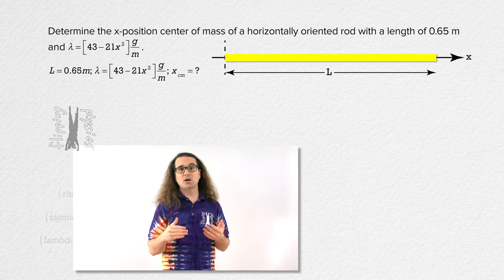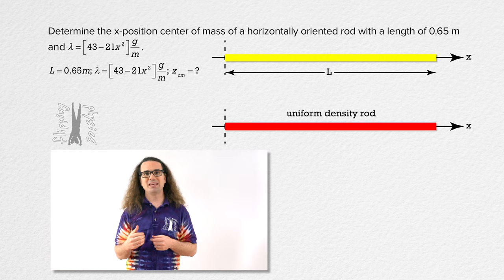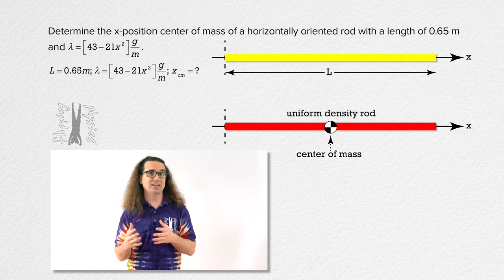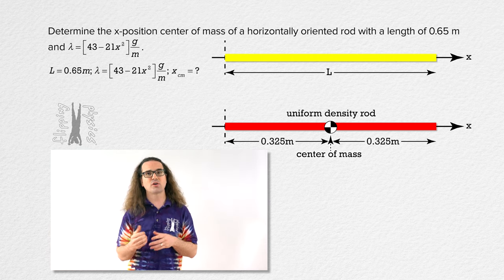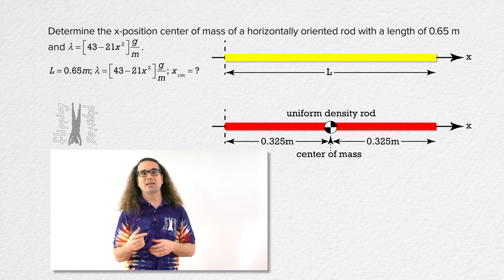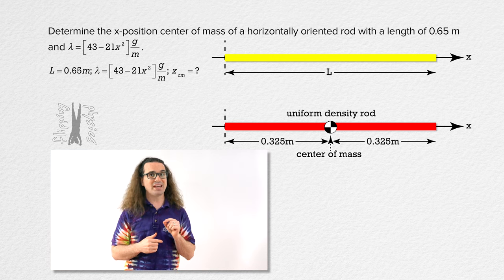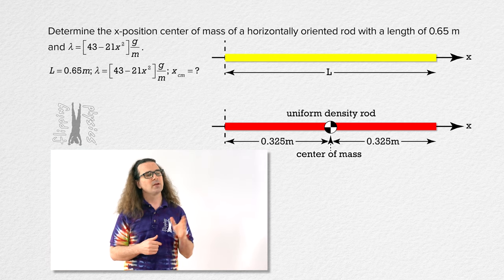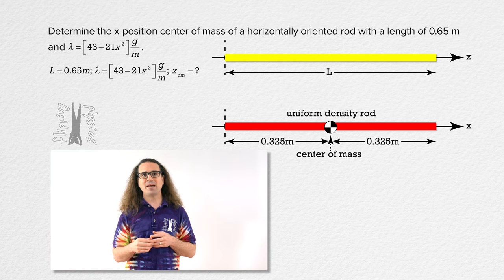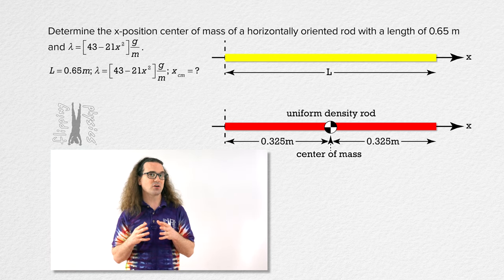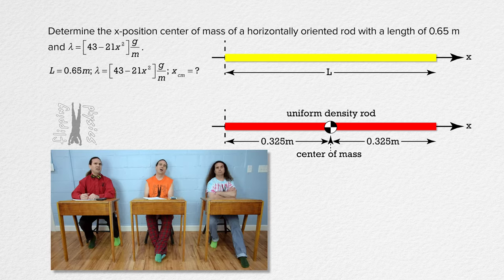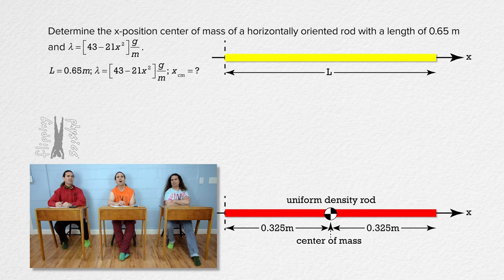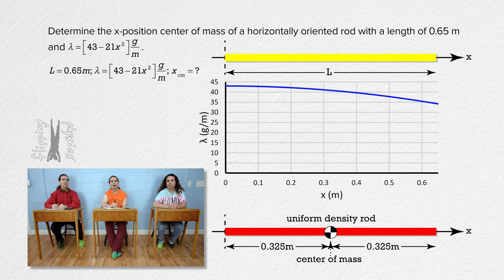How? Well, if the rod were of uniform density, its center of mass would be at its geometric center right in its middle, or 0.325 meters from either end. Considering the rod has a linear mass density of 43 minus 21x squared grams per meter, Billy, where would you expect its center of mass to be relative to the geometric center of the rod? How would we know that? When x equals 0, the linear mass density of the rod equals 43 grams per meter, and as the x-position increases according to the equation, the linear mass density of the rod decreases.